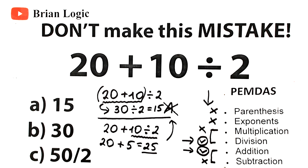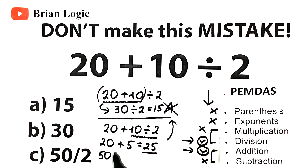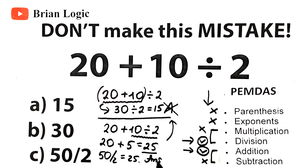Let's look at the options. 15 is not correct, 30 is not correct, but what about 50 over 2? From school you should know that this is simple division: 50 over 2 equals 25. And this is our option — option C. So our answer is option C.